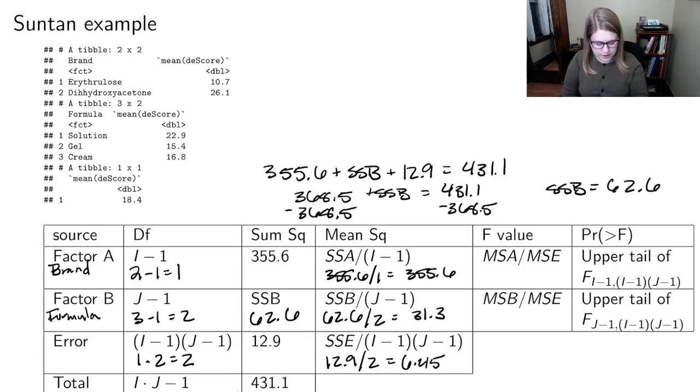And then I can find those F values. I'm going to do my mean squared for A, 355.6 divided by the mean square for the error, 6.45. And that's 55.13.